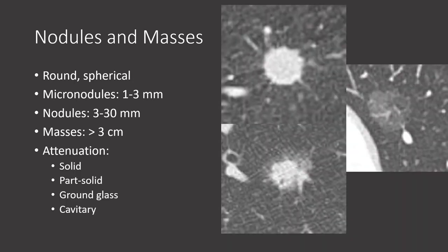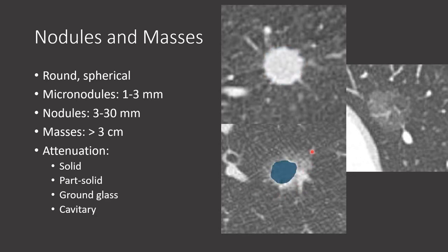Not only do we want to discuss nodule size, we also want to talk about their density — that is, are they solid, part solid, ground glass, or even cavitary? The top nodule represents a solid nodule. The middle nodule has a solid component centrally but ground glass opacity at the edges — a part solid nodule. The right-hand nodule is a pure ground glass nodule without solid components. These distinctions are important as follow-up and likely etiologies depend on both nodule size and density.